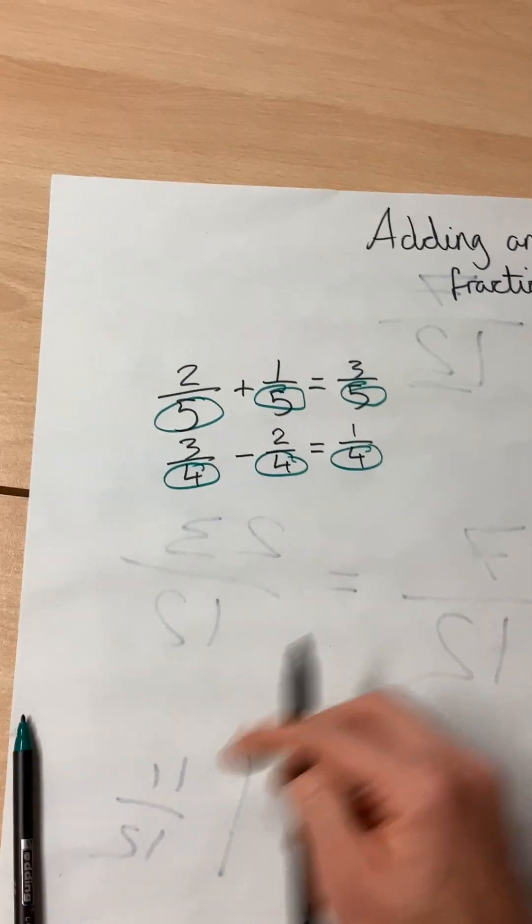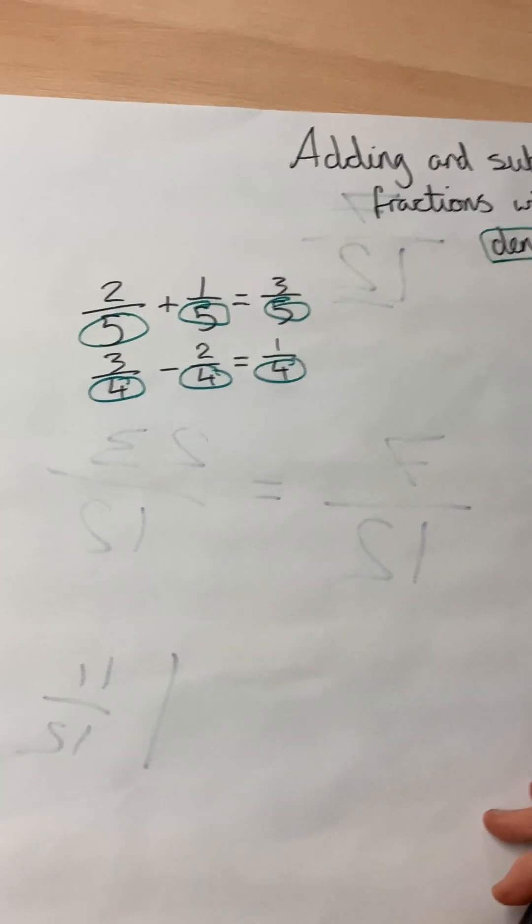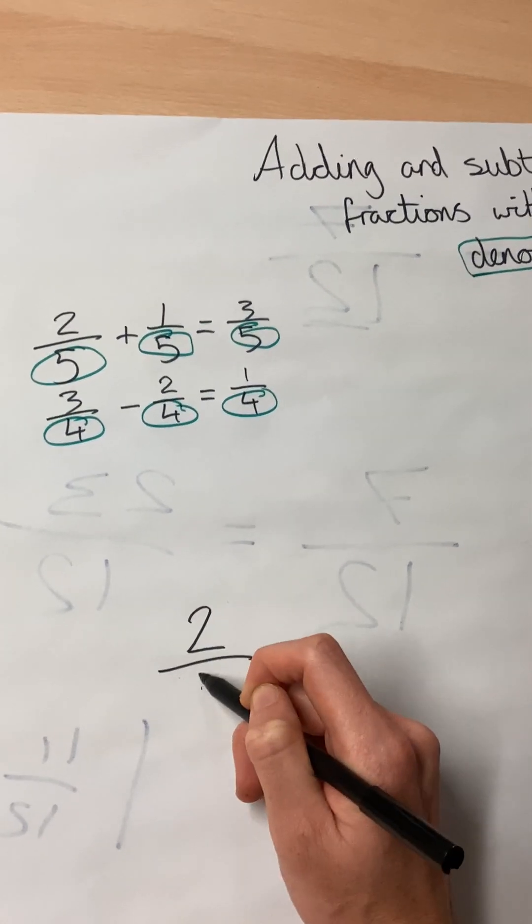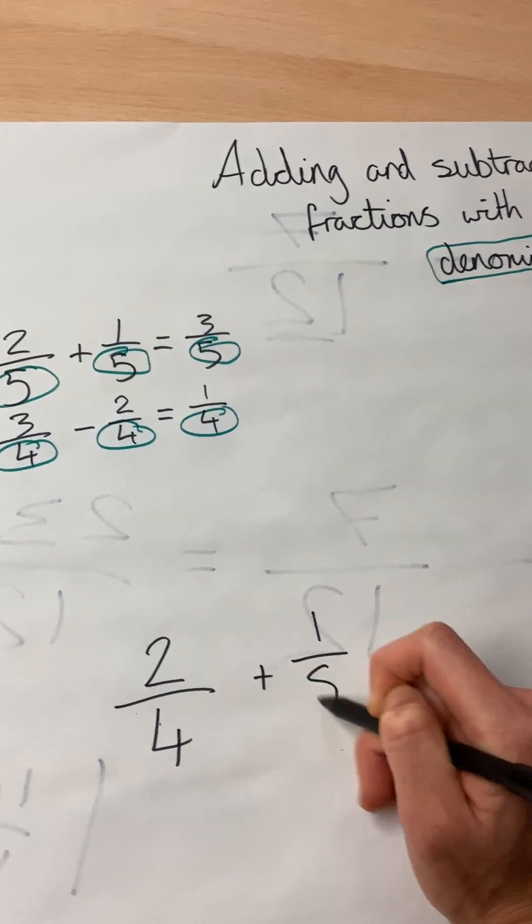But if the denominators, the numbers on the bottom of the fraction, are different, it becomes harder. So for example, two-quarters plus one-eighth.